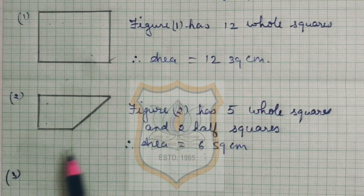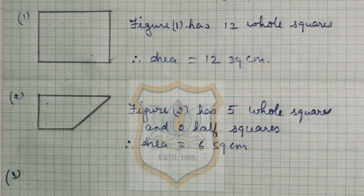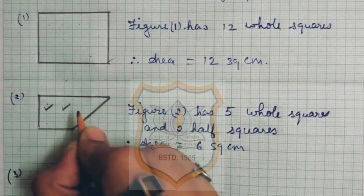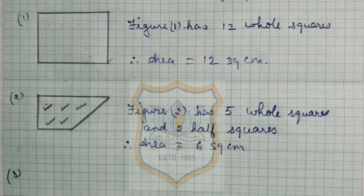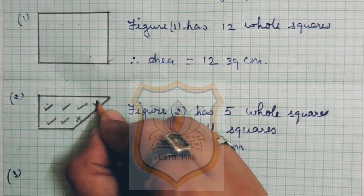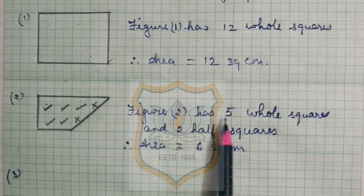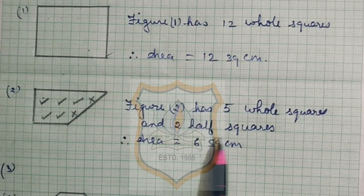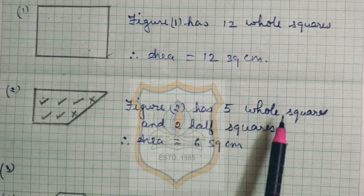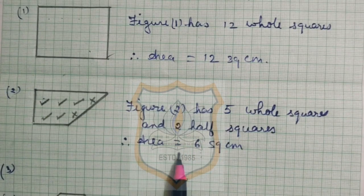Now here you can see another figure is given. In this figure we have to count how many complete squares, more than half squares, less than half squares, and half squares are given. We will put a tick on the complete squares — there are 5 complete squares. We will put a cross on the half squares — 2 half squares are given. So figure 2 has 5 whole squares and 2 half squares. Two half squares equal 1 whole square, so 5 plus 1 — the area is equal to 6 square centimeters.